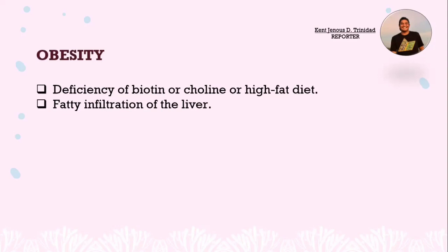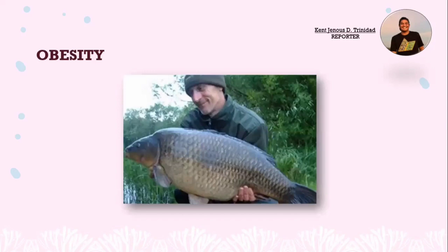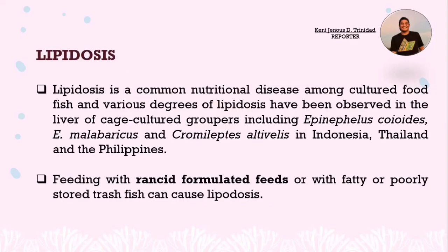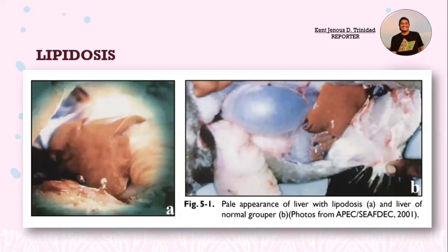An example of nutritional diseases is obesity — deficiency of biotin or choline, or a high-fat diet — causing fatty infiltration of the liver. The next example is lipidosis. It is a common nutritional disease among cultured food fish, and various degrees of lipidosis have been observed in the liver of cage-cultured groupers including Epinephelus coioides, Epinephelus malabaricus, and Cromileptes altivelis in Indonesia, Thailand, and the Philippines. Feeding with rancid formulated feeds or with fatty or poorly stored trash fish can cause lipidosis, which presents with a pale appearance of the liver.